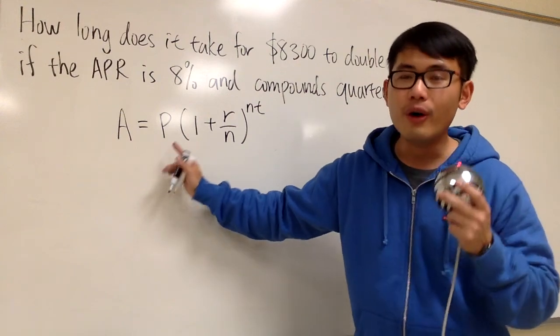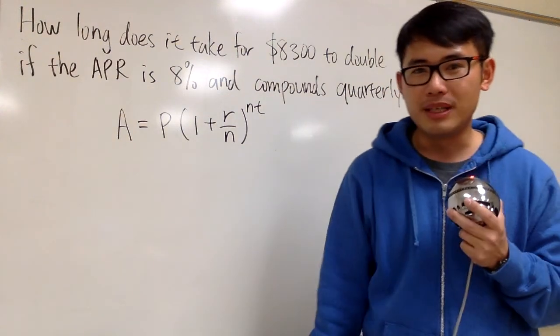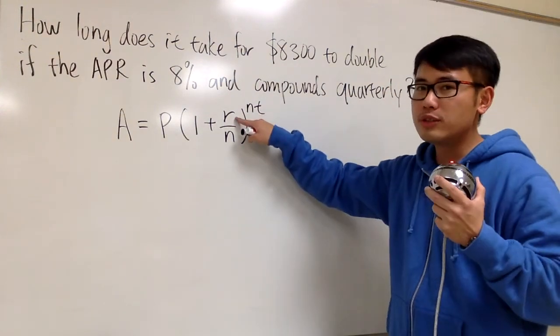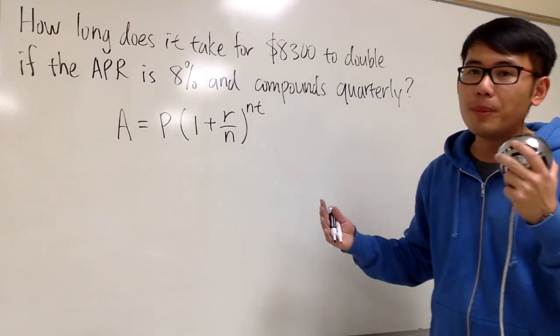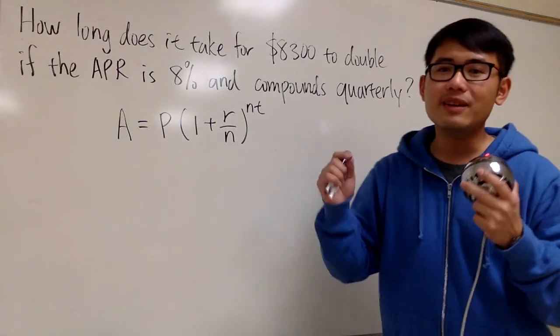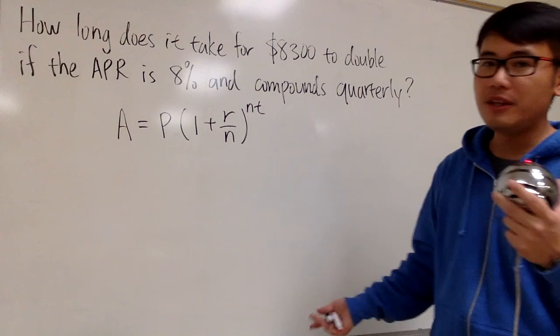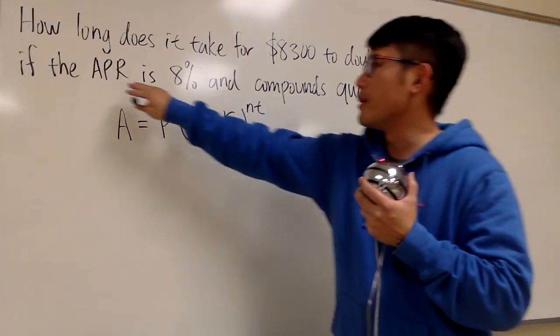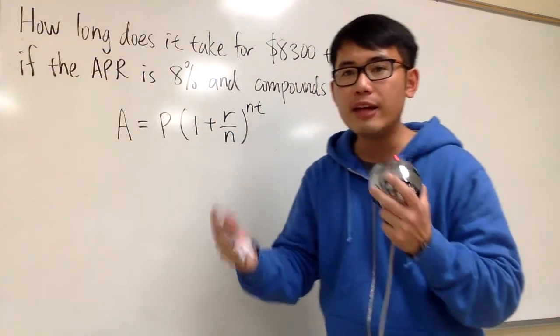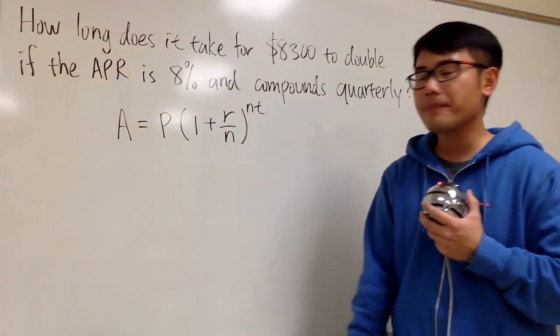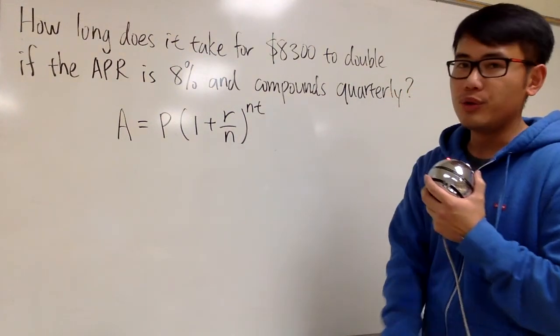This P stands for the principal, that means how much money you have to begin with. And then R is the interest rate, and the N is how many times we compound it in one year. And T is how many years. And because we're talking about APR, A stands for annual, that means year. This is the formula we're going to use.